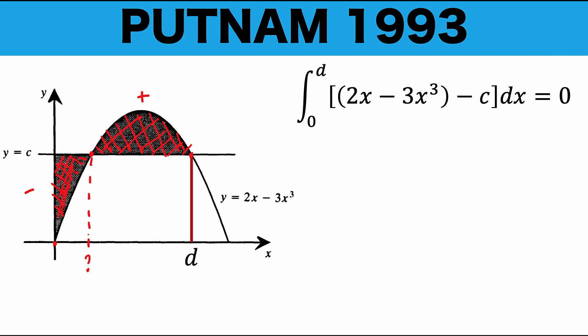Now, let's compute for the antiderivative of this function. The antiderivative of 2x is 2x squared over 2 or x squared. The antiderivative of 3x cubed is 3x to the fourth over 4. We copy the sign. And the antiderivative of this constant c with respect to x is cx. And we are evaluating this from 0 up to d. Then copy the right side.